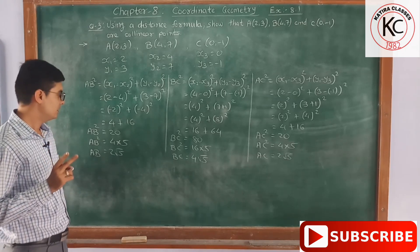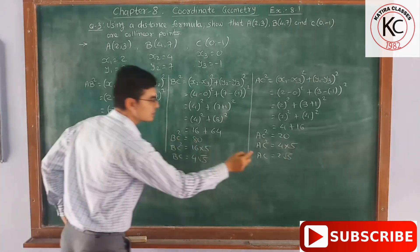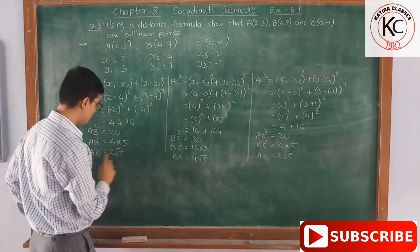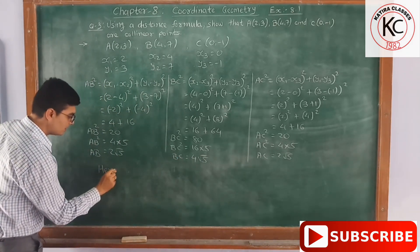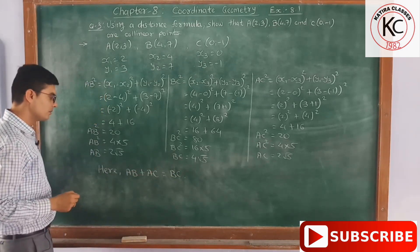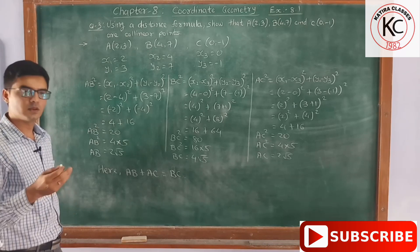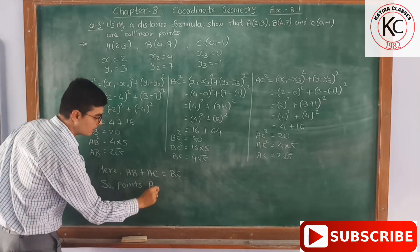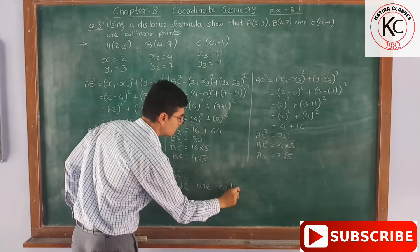Now to find that these points are collinear, we have to check that the sum of two line segments is equal to the third line segment. Here, AB + AC = 2√5 + 2√5 = 4√5, which equals BC. Since the sum of two line segments equals the third, we can say that points A, B and C are collinear points.